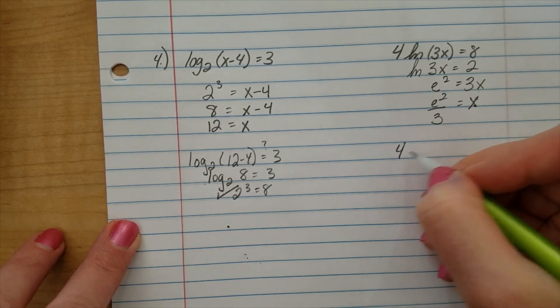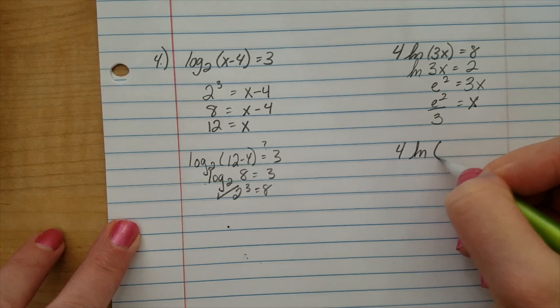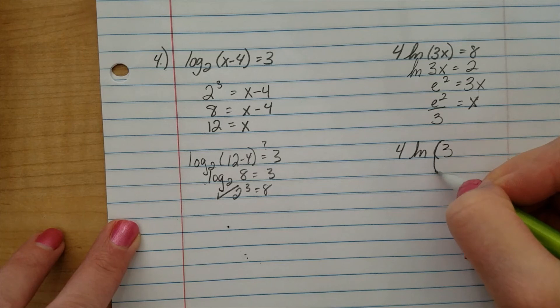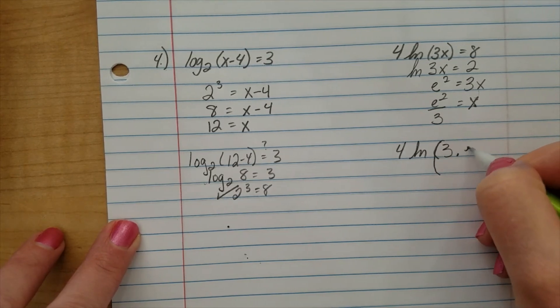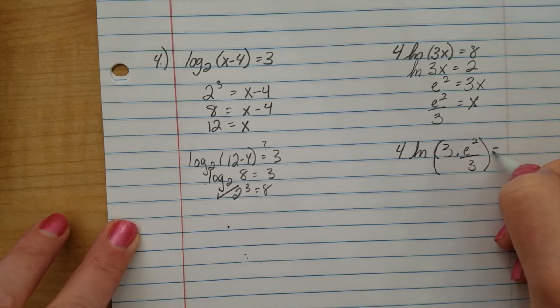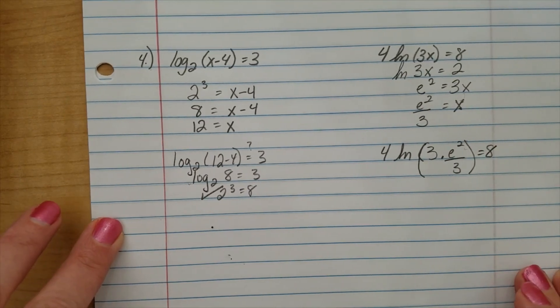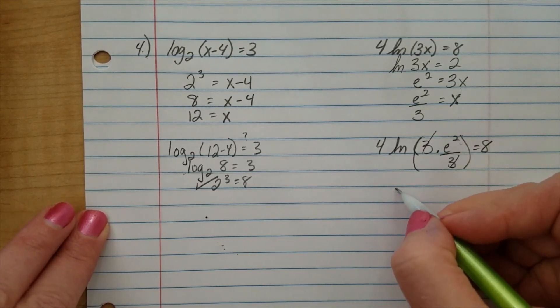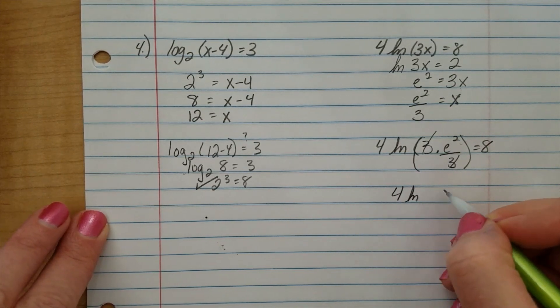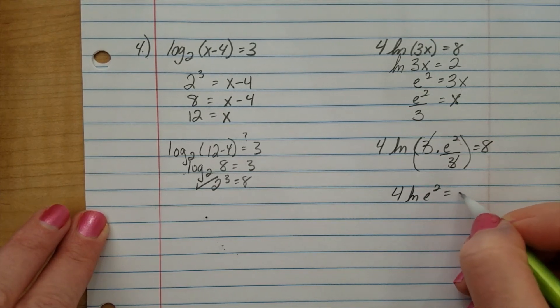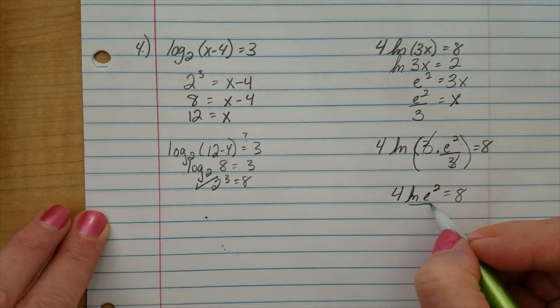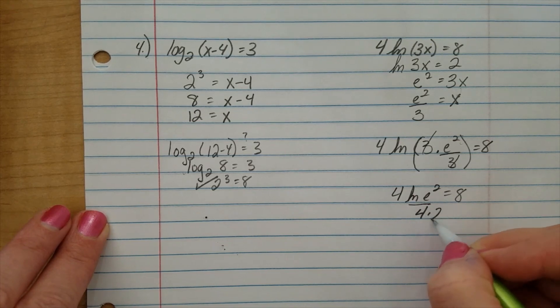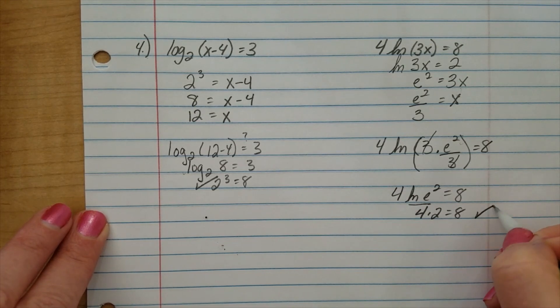Okay. Now, let's check. 4 ln of 3. I should have made this bigger. Here, 3 times e squared all over 3. Does that equal 8? Well, here my 3s reduce out. 4. Natural log of e squared equals 8. Natural log and e undo each other. We get 4 times 2 equals 8, which is true.